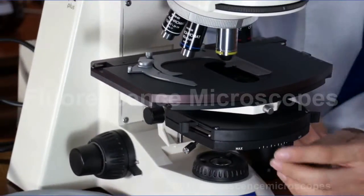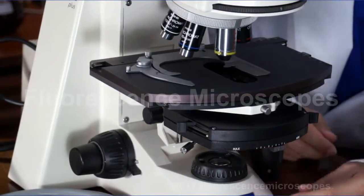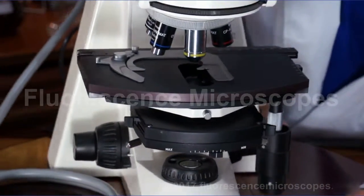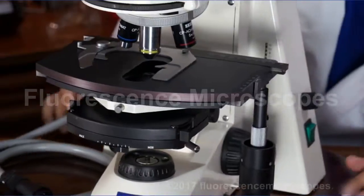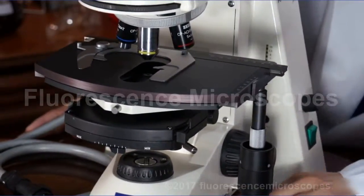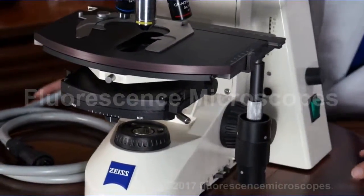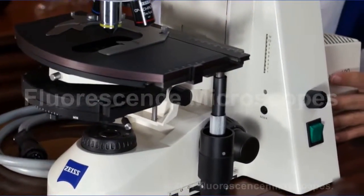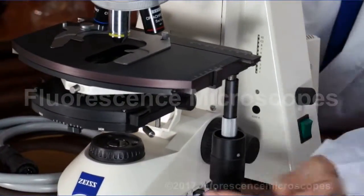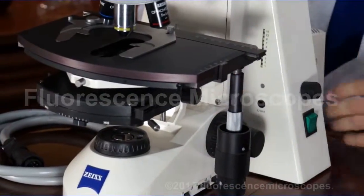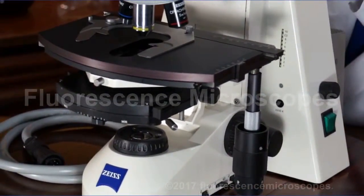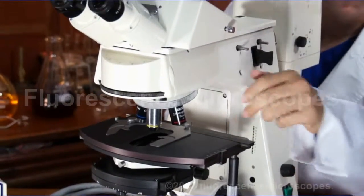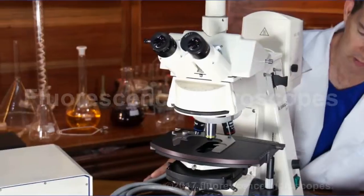You also have an iris diaphragm inside the condenser. And you've got some neutral density filters on the transmitted light. This is a halogen light source, the bottom light source, transmitting through the specimen. As opposed to reflected light from the mercury, which reflects down onto the specimen and does not transmit through the specimen.